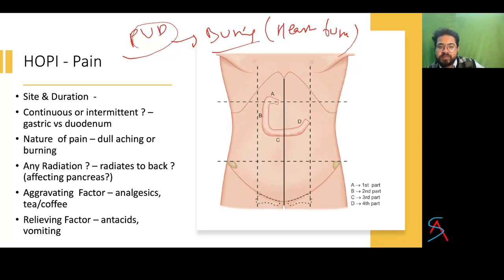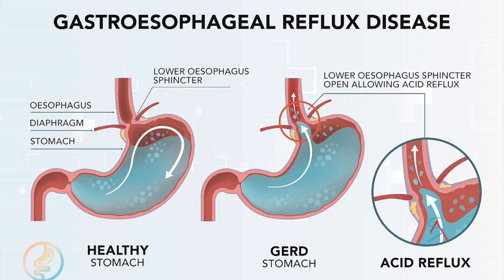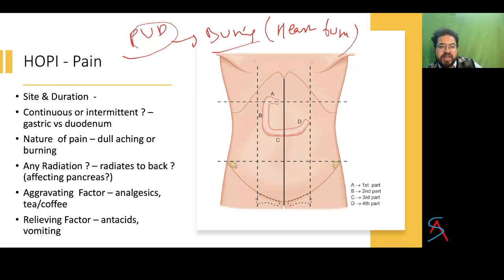Heartburn is typically a feature of gastroesophageal reflux disease (GERD), caused by a faulty lower esophageal sphincter resulting in backflow of gastric acid causing burning sensation, regurgitation of food or salty liquid in the mouth, and especially happens when the person lies down at night. If the pain is continuous, suspect gastric carcinoma or pancreatic disease. Ask about aggravating factors like tea, spicy food, or NSAIDs.